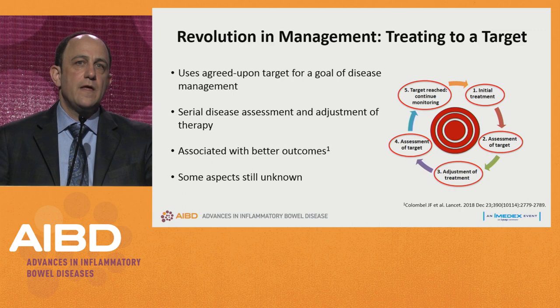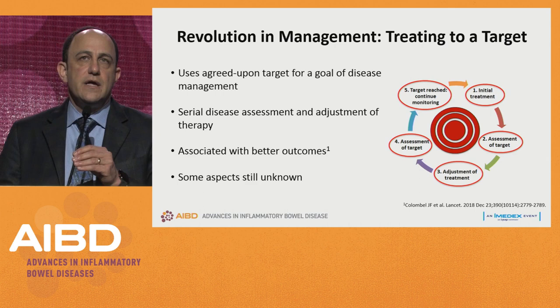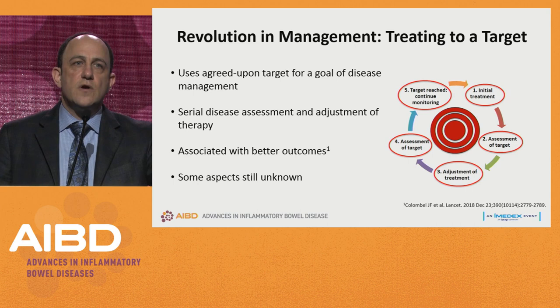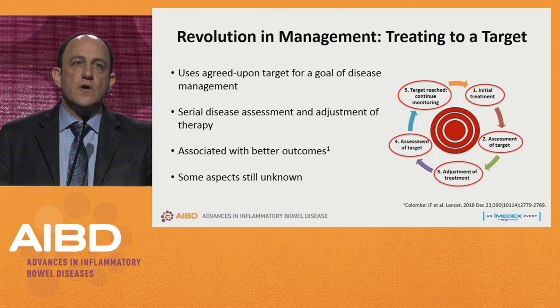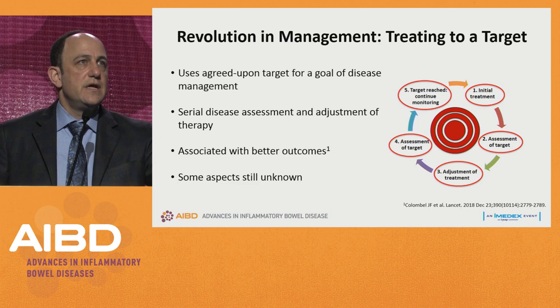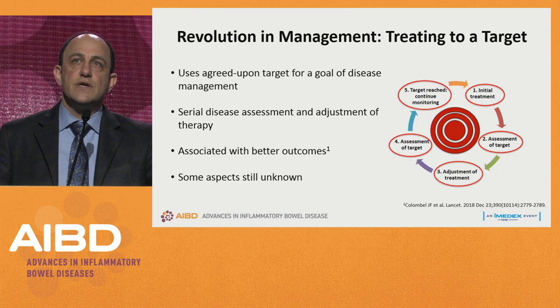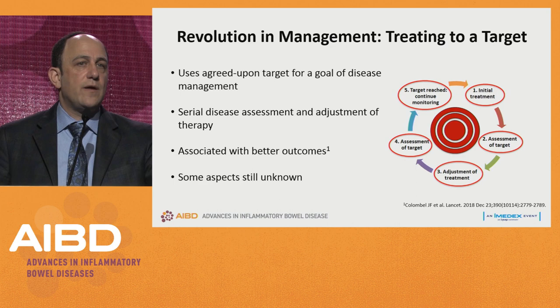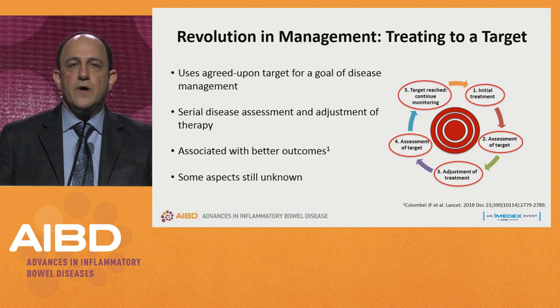The revolution in management is the concept of treating to achieve a target. The general principle is using agreed-upon targets for disease management, and these targets should be individualized. It involves serial disease assessment and adjustment of therapy in some algorithmic or pre-planned way. You'd like the patient to buy into this and understand why we're doing it. We know from the CALM study published in Lancet that this is associated with better outcomes.